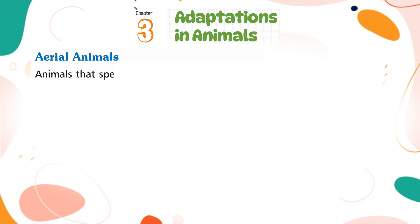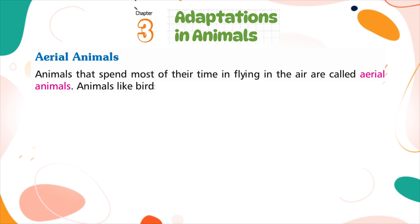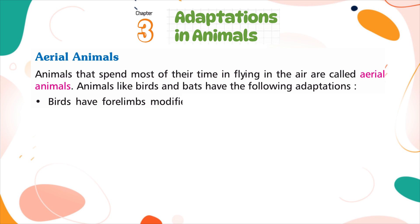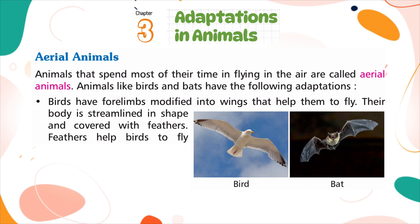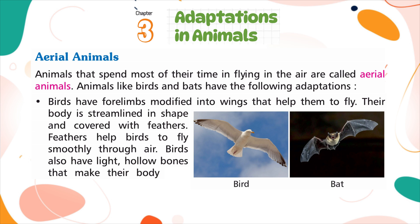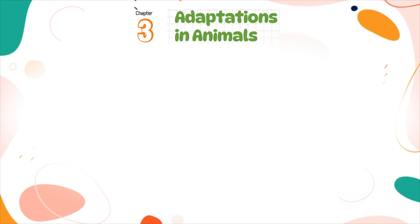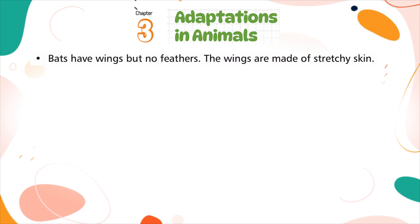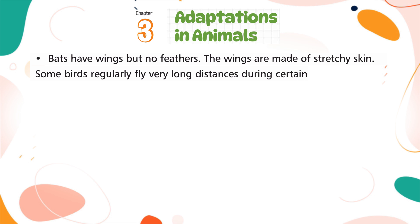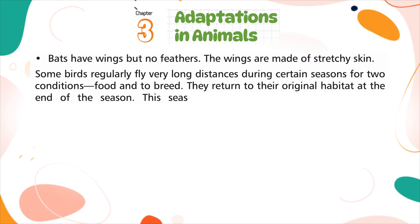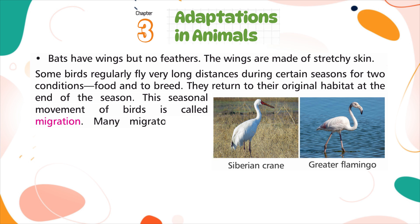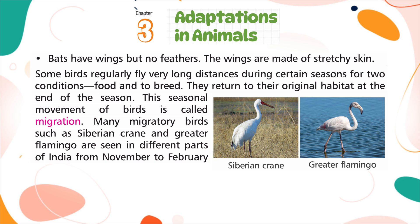Aerial Animals. Animals that spend most of their time flying in the air are called aerial animals. Birds have forelimbs modified into wings, a streamlined body shape, and feathers that help them fly smoothly. Birds also have light, hollow bones that make their bodies light enough to fly. Bats have wings made of stretchy skin but no feathers. Some birds regularly fly very long distances during certain seasons for food and to breed, returning to their original habitat at the end of the season. This seasonal movement is called migration. Migratory birds such as the Siberian crane and greater flamingo are seen in parts of India from November to February every year.